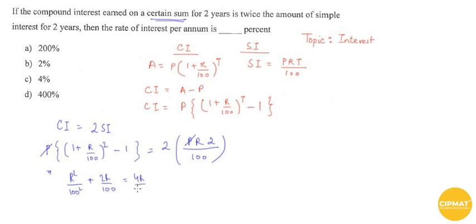When you solve this equation, you get R by 100 equals 2, so R equals 200.